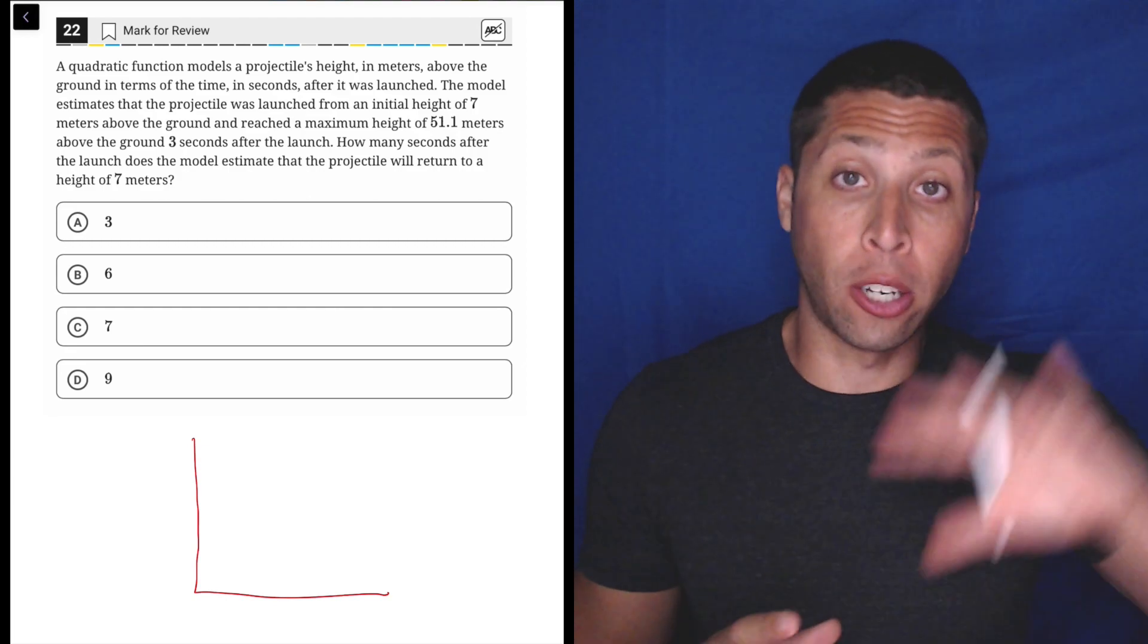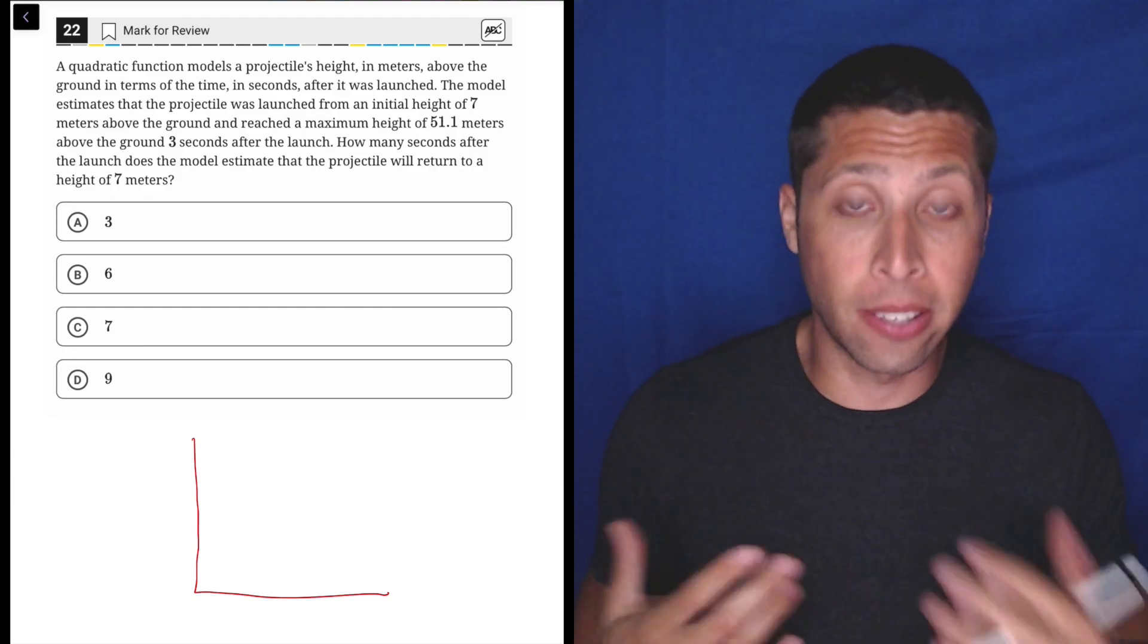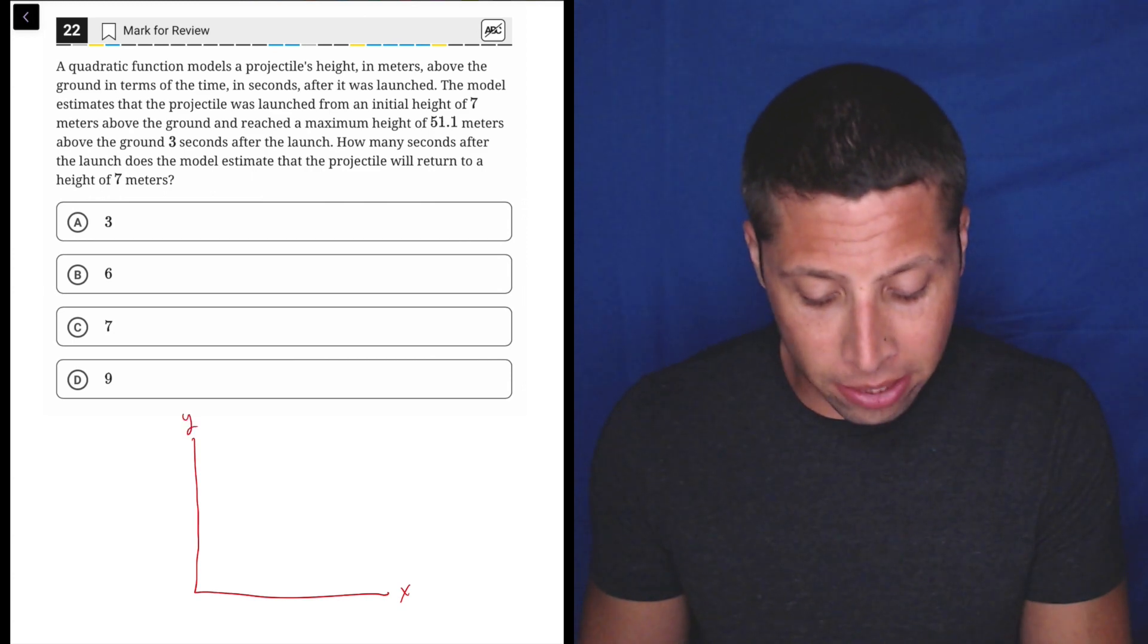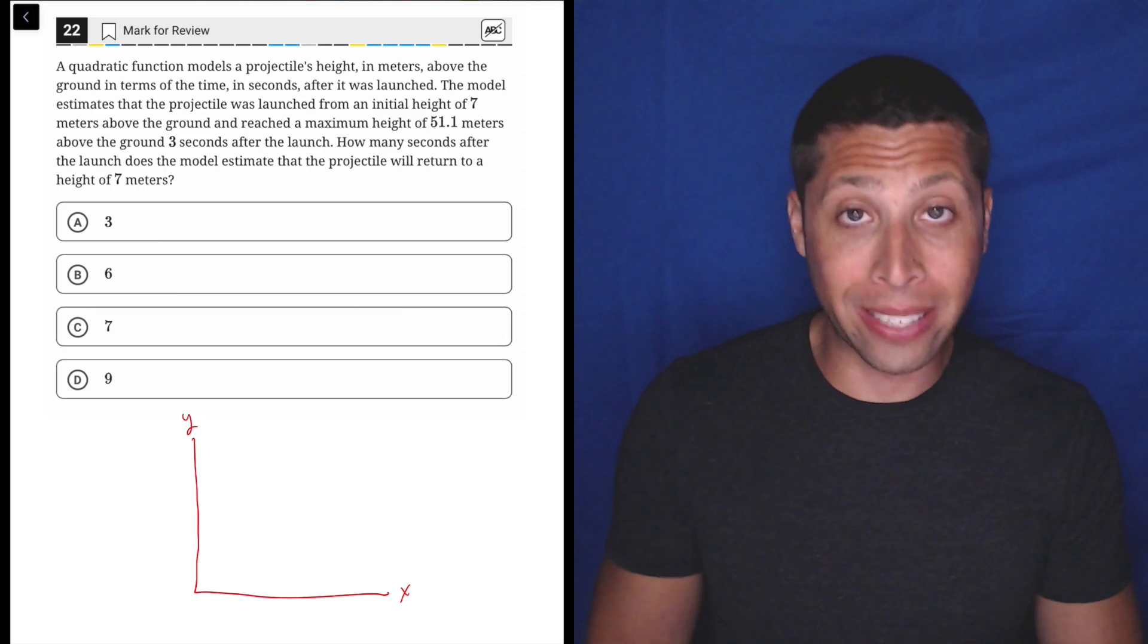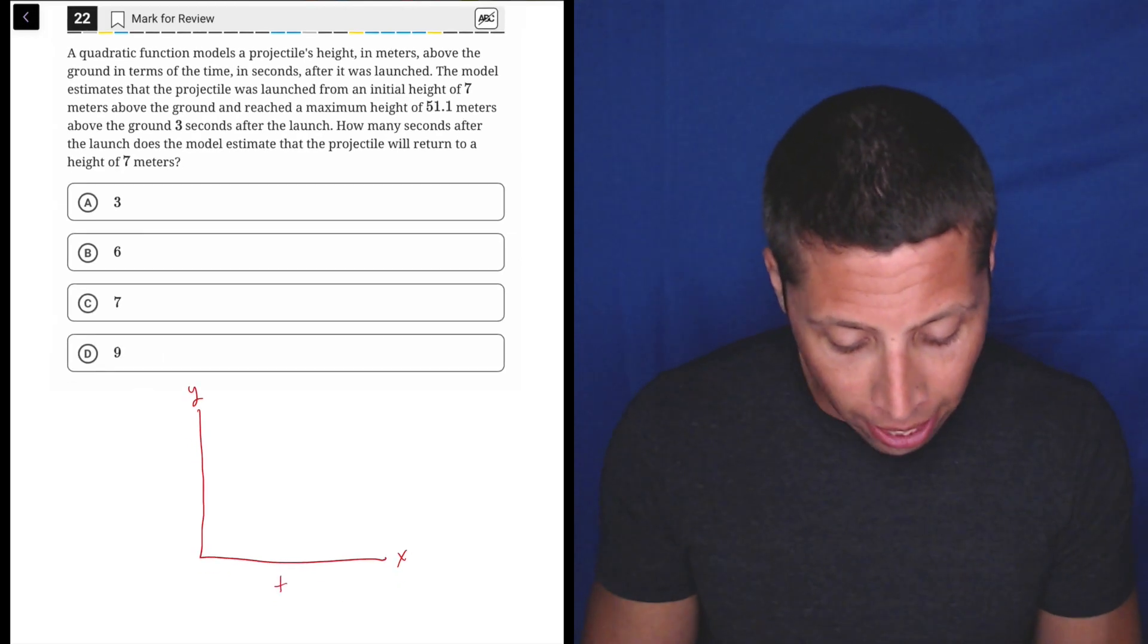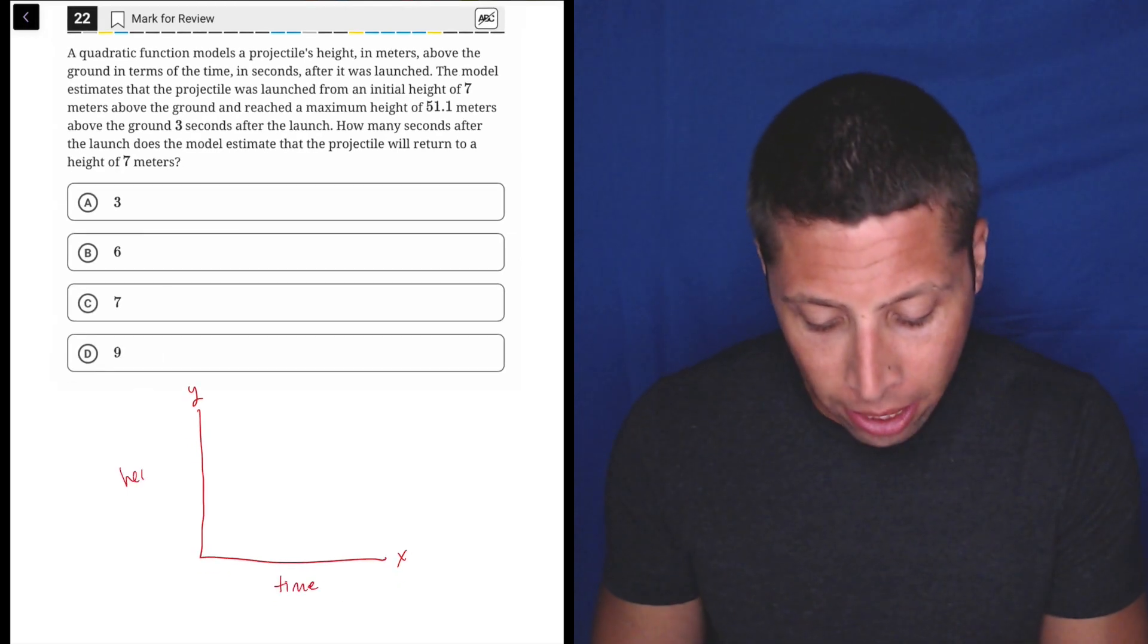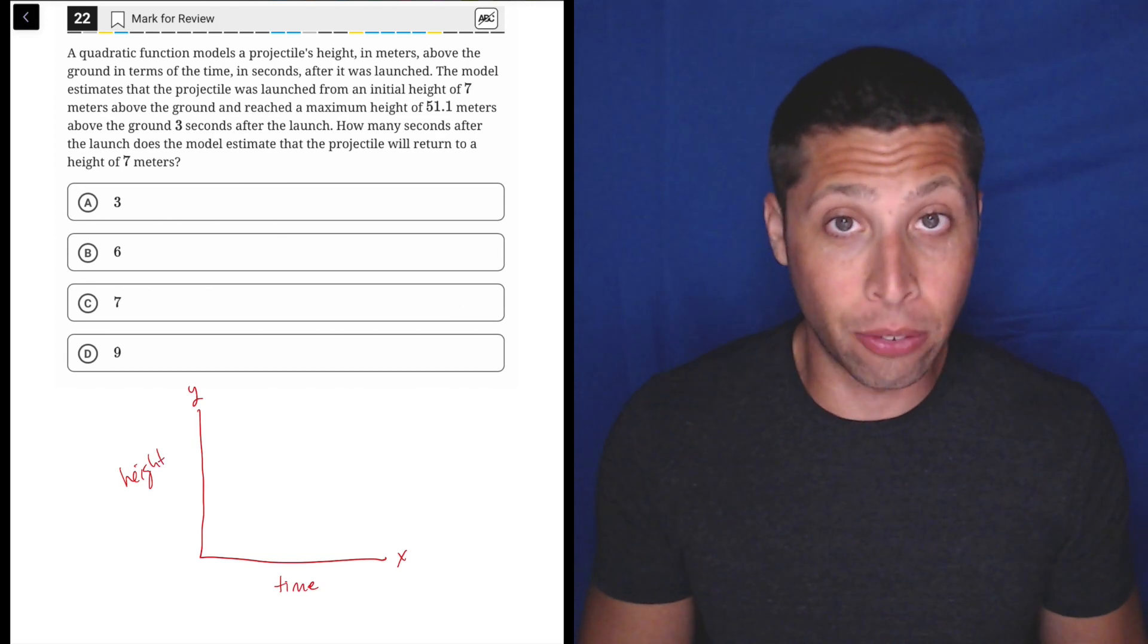But it only occurs in that first quadrant where the X's and the Y's are positive. And the reason is that it's a projectile's height, so we're talking about time, which is the X, and we're talking about height, which is the Y. You can't have a negative height, you can't have a negative time.